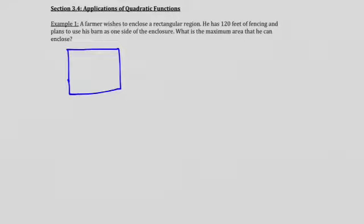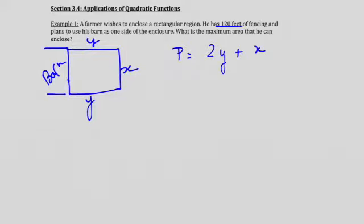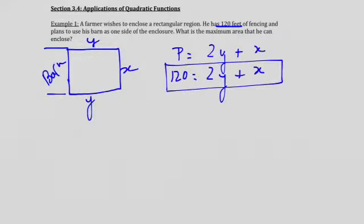One of these sides is used with a barn, so let's put the barn right here. And so, when I look at my fence, I got two sides defined with y and one side defined with x. So my perimeter is going to be 2y plus x. Because they are telling me that the perimeter is 120 feet, I'm supposed to be able to write 120 equal 2y plus x. That is one equation.